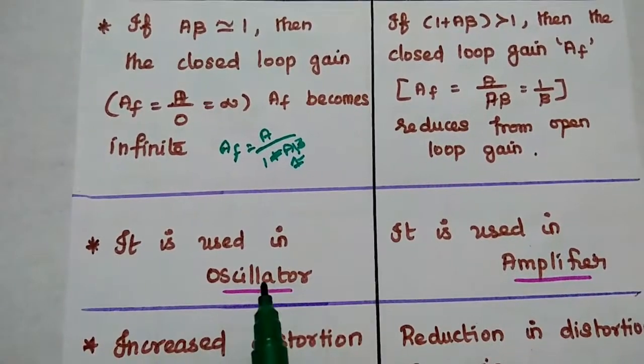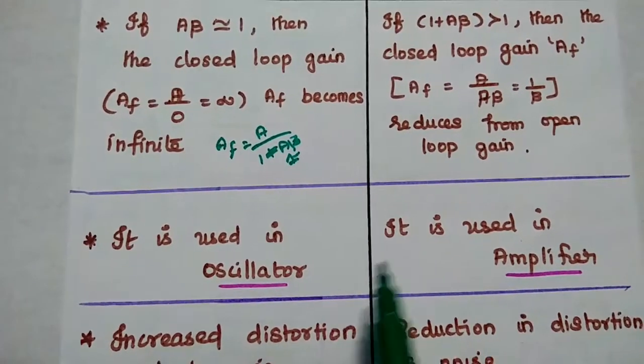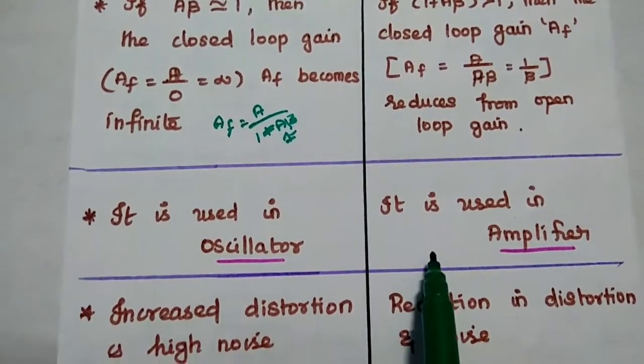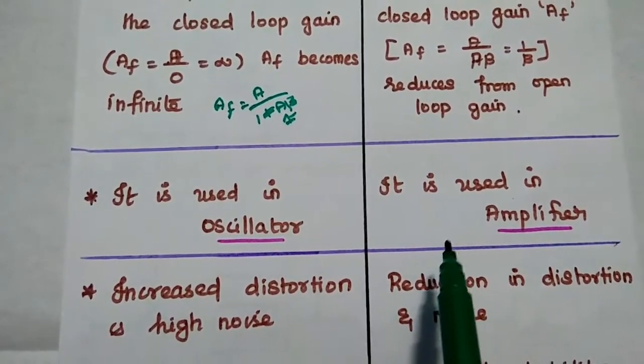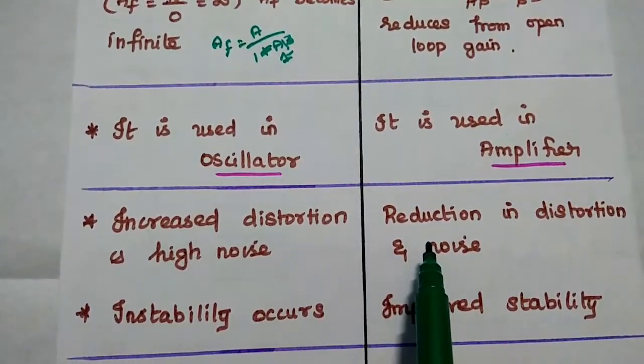Positive feedback is widely used in oscillators. Negative feedback is widely used in amplifier circuits.